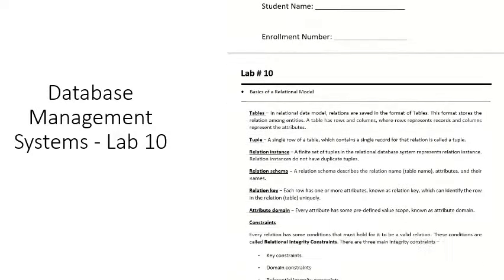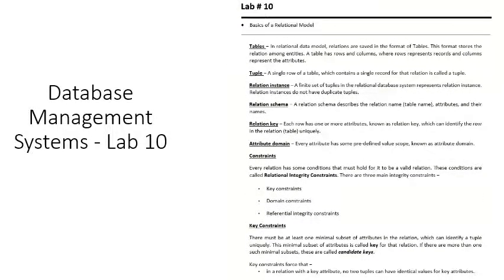The relational model has some basic concepts. One major concept is that you have a relation. In common terms, we also call it a table. Basically, the relation is called a table. When we visualize it, it is stored in the format of a table. This table is essentially a relation, and it most closely resembles the concept of an entity from the entity relationship model.